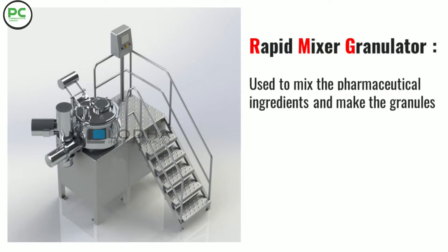Rapid mixer granulator is used to mix pharmaceutical ingredients and make granules. It is used to do wet granulation — generally solvents are used, hence it is called wet granulation. It is also called high shear granulation since high shear is involved in the process.